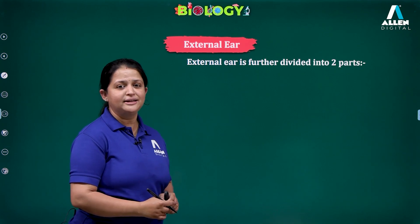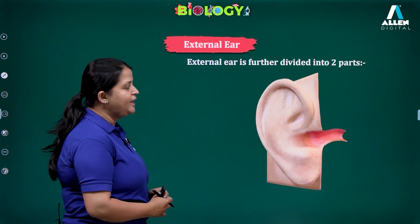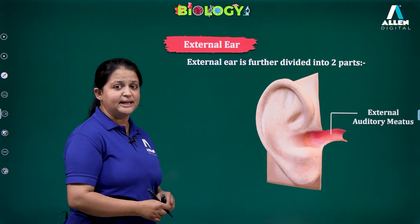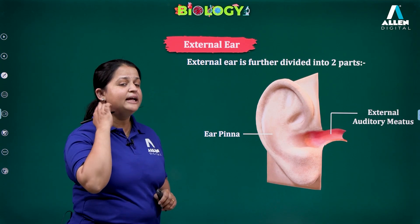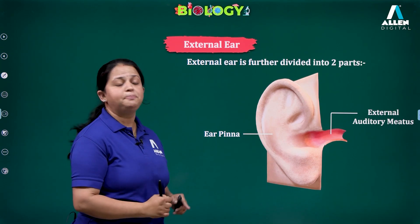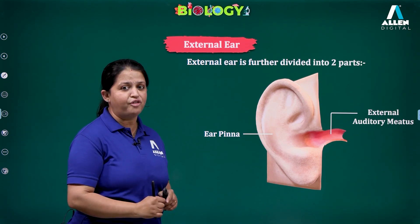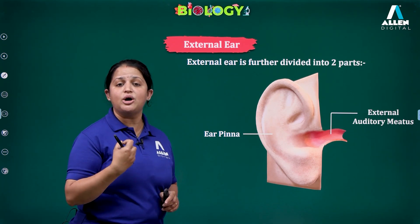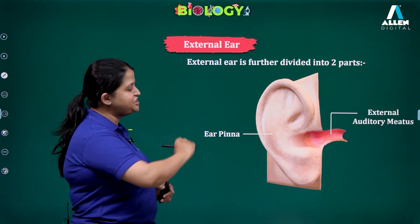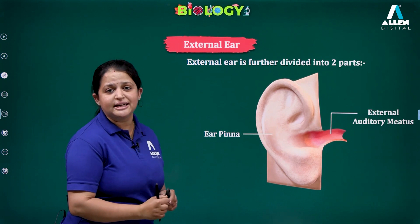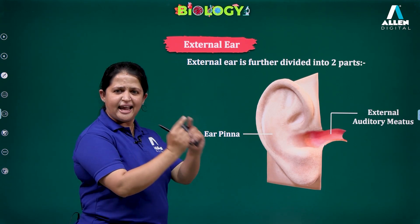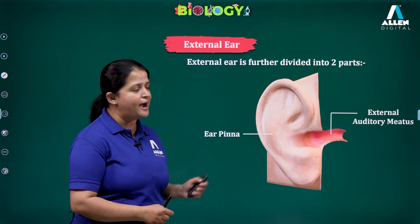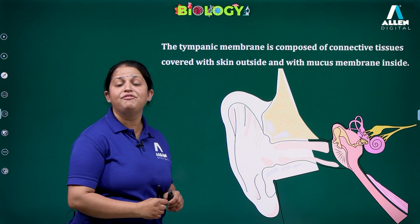Starting with the first one, the external ear. External ear consists of two parts: one is the external auditory meatus and another one is the outer ear pinna. This outer ear pinna is the characteristic feature of all mammals. The ear pinna receives sound signals from all directions and channelizes them to the auditory meatus, which is canal-like and transmits the sound waves to the tympanic membrane.